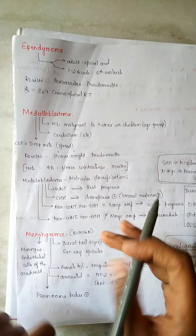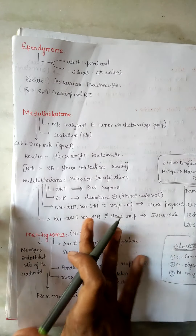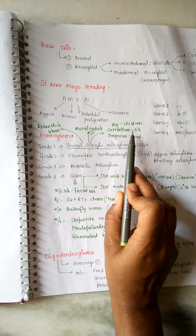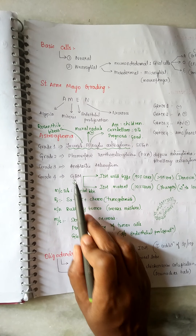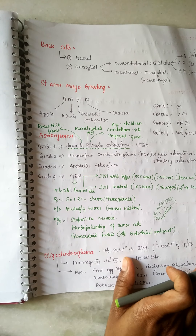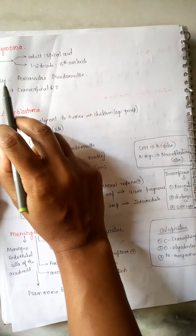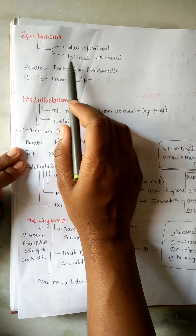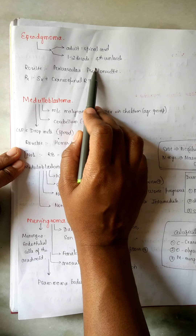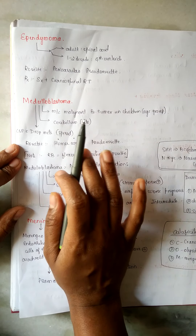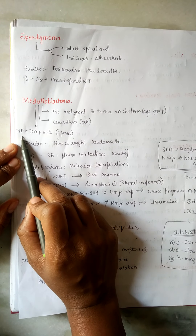Medulloblastoma is the most common brain tumor in children. The site is the cerebellum. To recap sites: juvenile pilocytic astrocytoma — cerebellum; GBM — frontal lobe; oligodendroglioma — frontal lobe; ependymoma — spinal cord (adults) or fourth ventricle (younger); medulloblastoma — cerebellum.